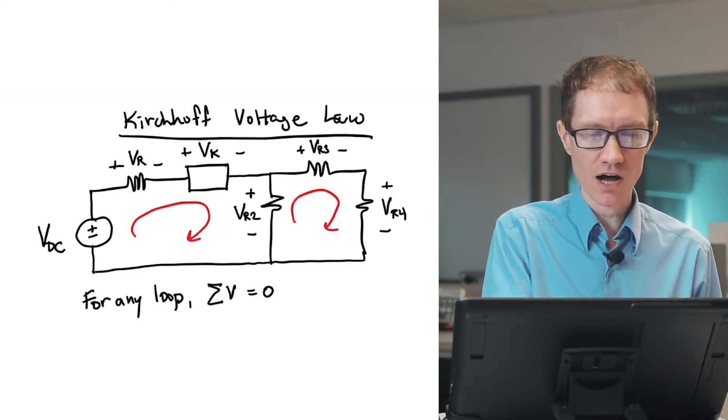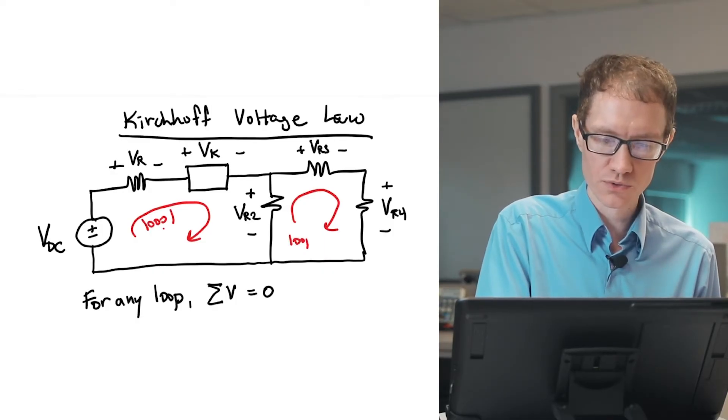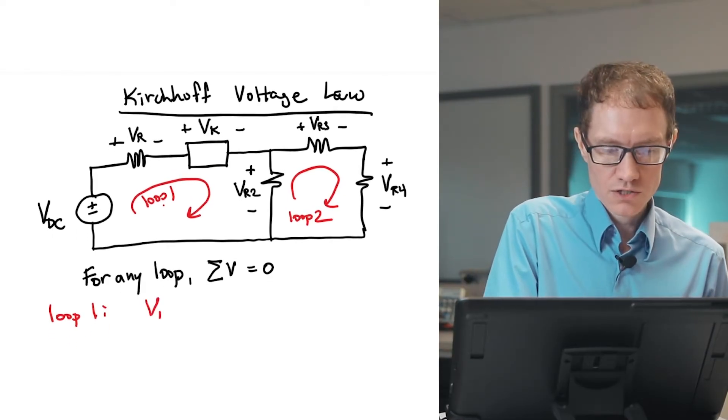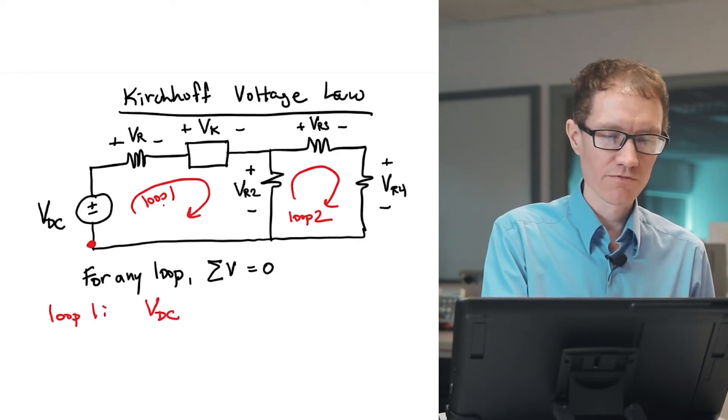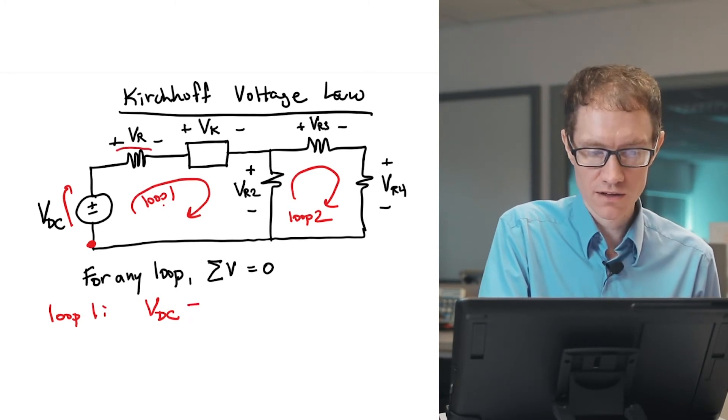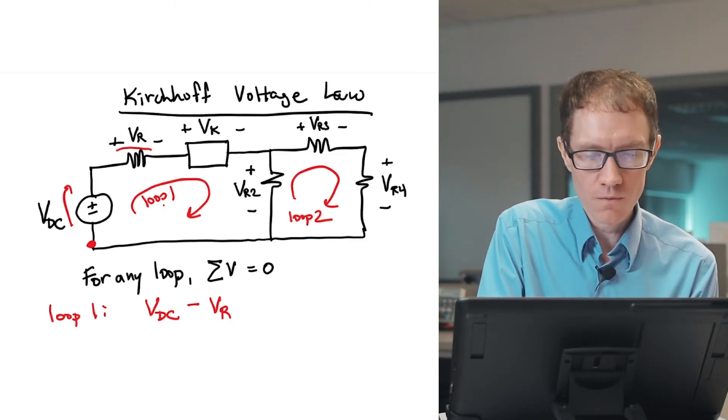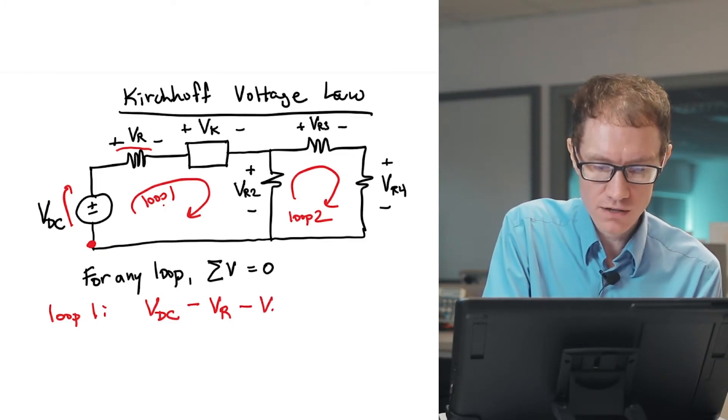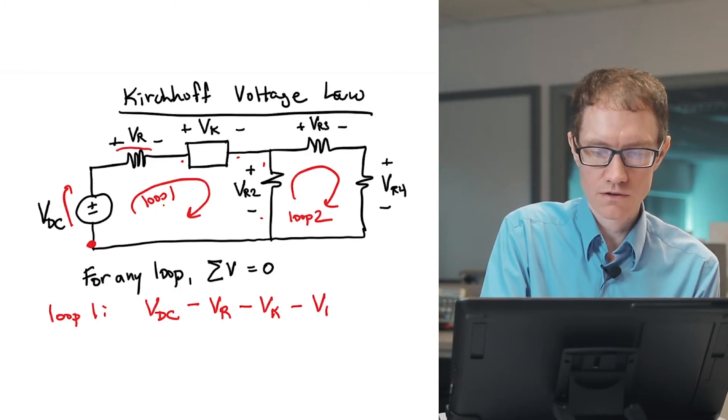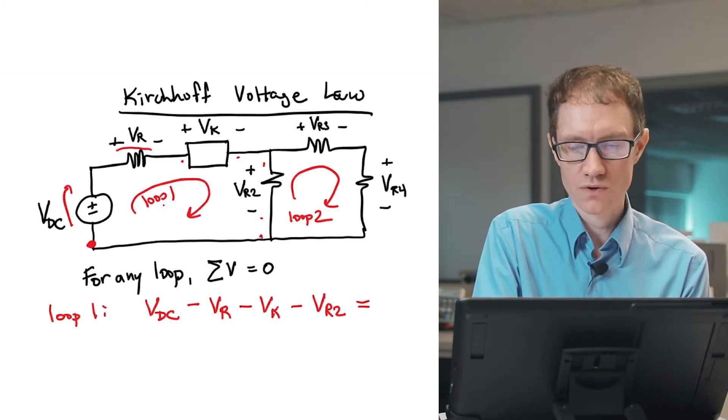Let's now apply the Kirchhoff Voltage Law to the first loop. I'll call this loop 1, I'll call this loop 2, and let's write it all out for loop 1. Starting from this point, we have a voltage rise of VDC. Then we have a voltage fall of VR, because it goes from plus to minus, therefore it's a voltage fall, so I put a minus sign in front of it. We have another voltage fall of VK from here to here, and then we have another voltage fall VR2. Now I'm back to my starting point, because they're connected with a wire. So these have to add up to zero.